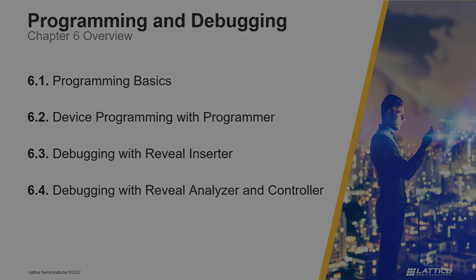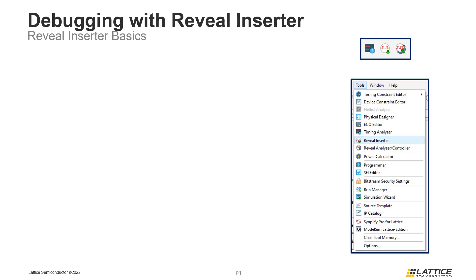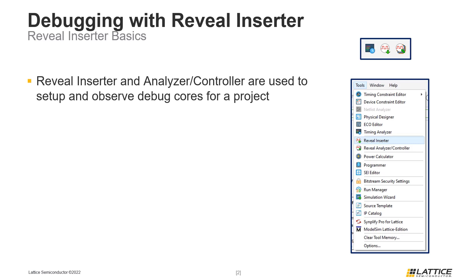Chapter 6, Section 3: Debugging with Reveal Inserter. In this section, we will review the general flow for debugging a Radiant project using Reveal Inserter and Reveal Analyzer and Controller. Once a device has been programmed, it can be debugged using Radiant's Reveal Inserter and Reveal Analyzer and Controller tools. Reveal Inserter is used to add debug cores to a project, and Reveal Analyzer and Controller are used to observe debug cores after they have been added.